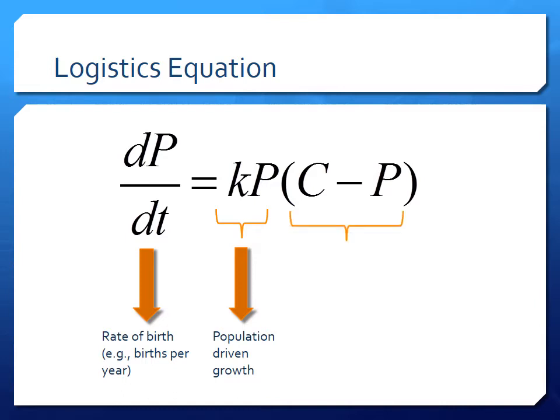The second factor on the right-hand side is the difference between the carrying capacity and the existing population. This difference limits or attenuates population growth: as population becomes close to the carrying capacity, this difference becomes smaller, which slows population growth. This is the carrying capacity limitation. It's a very classical model used to simulate growth, and I want to introduce it into our simple population model.